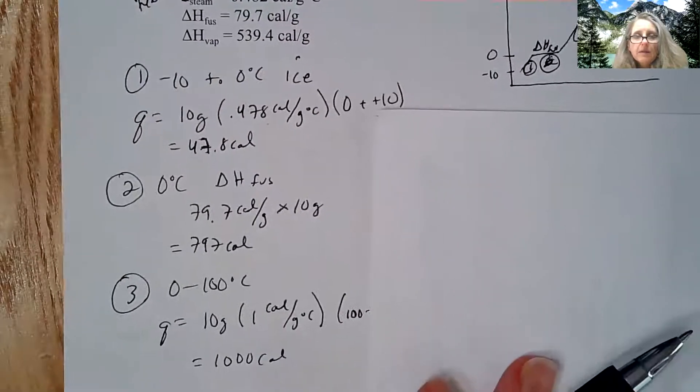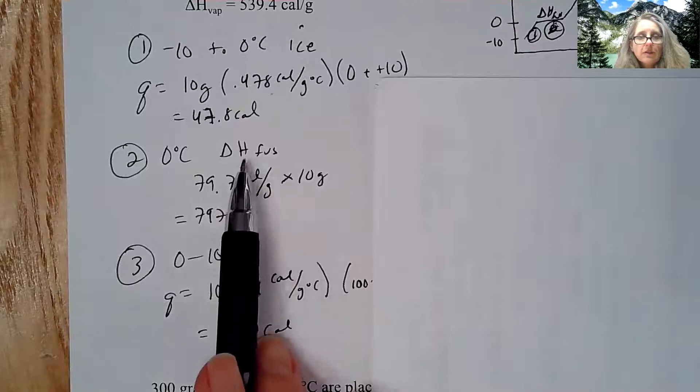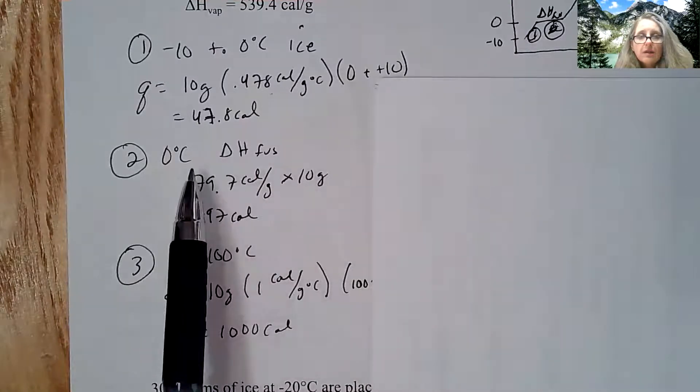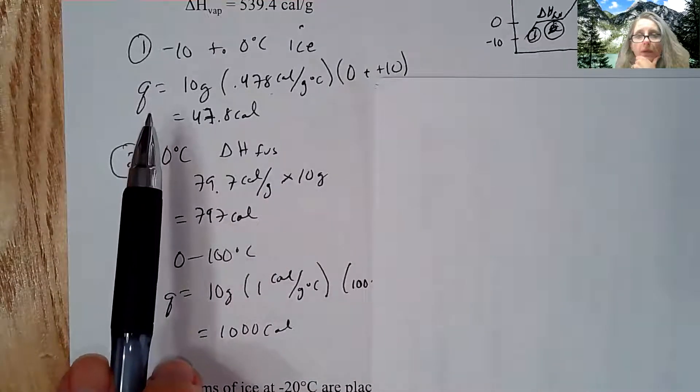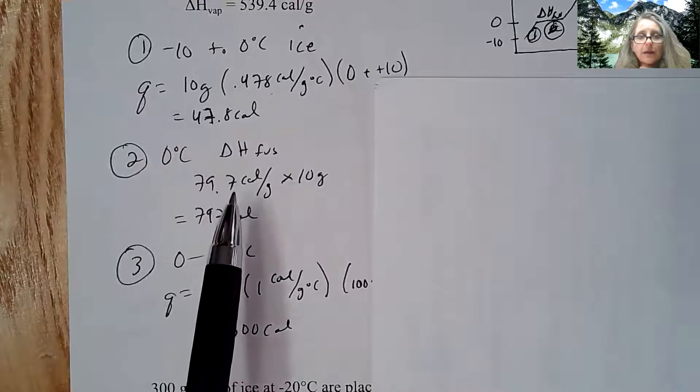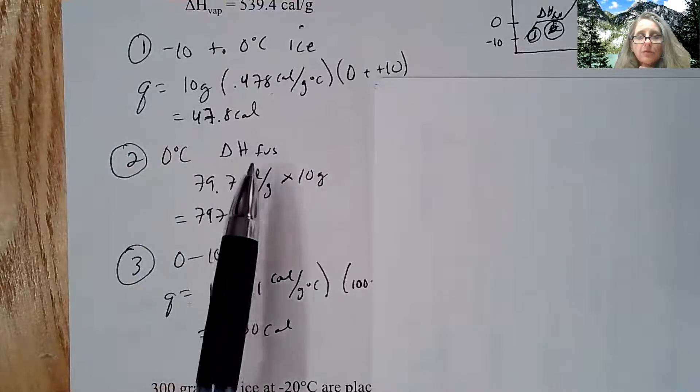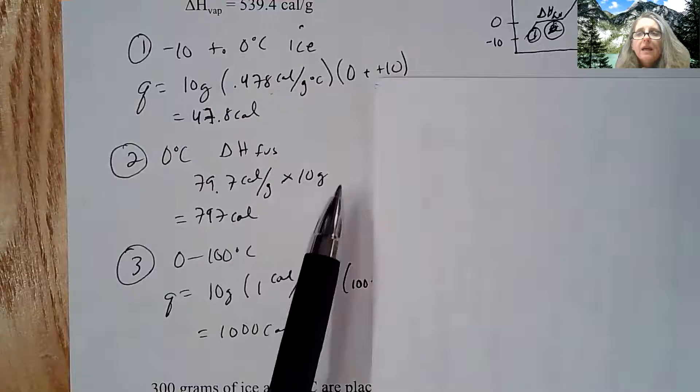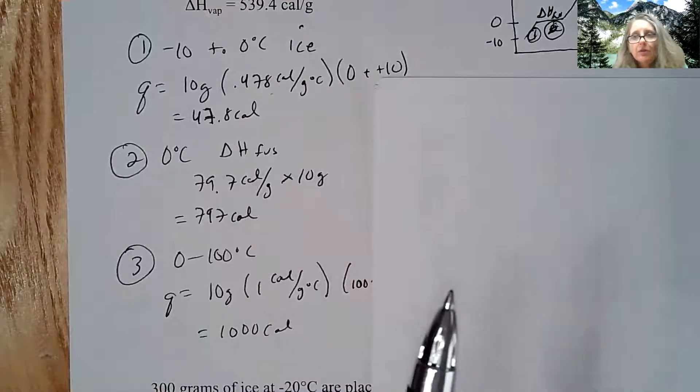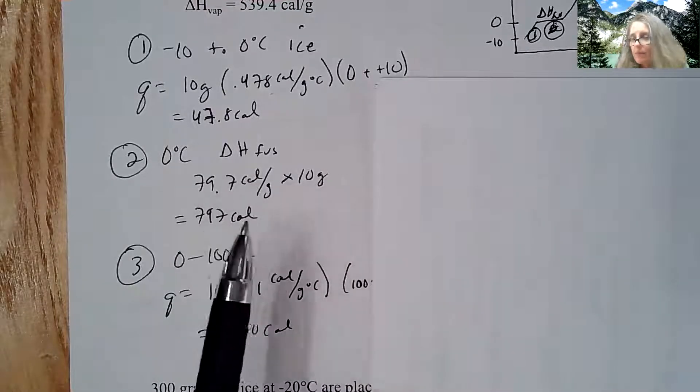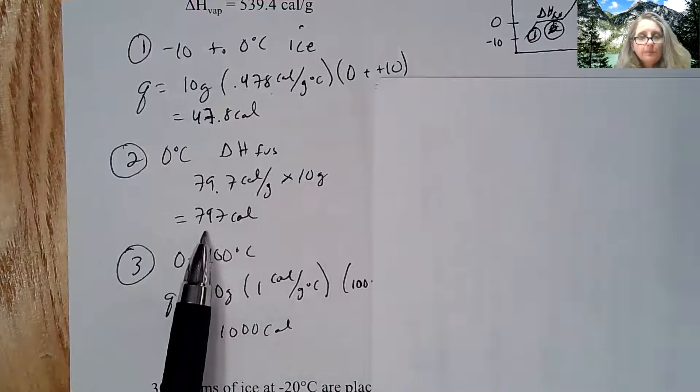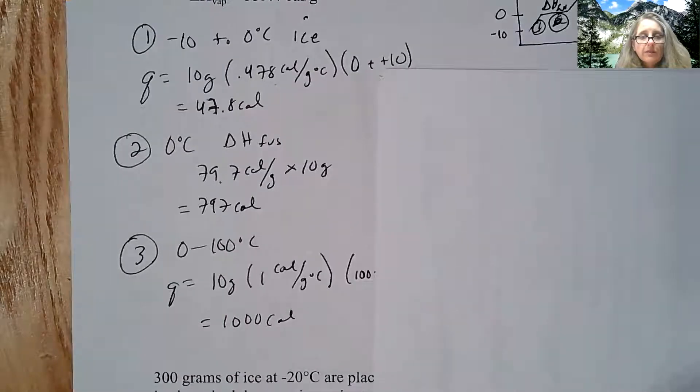Then once I'm at zero degrees Celsius, I have to use heat of fusion. I have no change in temperature, so I can't use Q. So I take my calories per gram at my heat of fusion, multiply it by the grams. Again, if you had this per mole, you just got to convert things to moles. Again, this was just to speed up the process. So about 797 calories for that step.